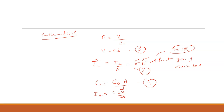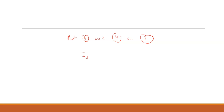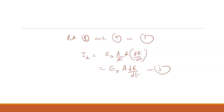Now put the values of V and C from equations 2 and 4 into equation number 1. So ID equals epsilon-naught A by D times the partial derivative of E with respect to t, which gives epsilon-naught A times partial E by partial t — equation number five, because the D cancels out.